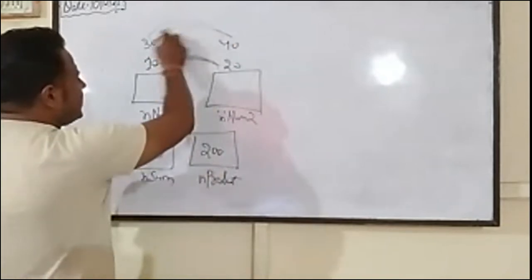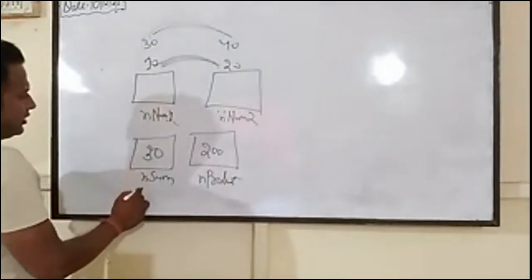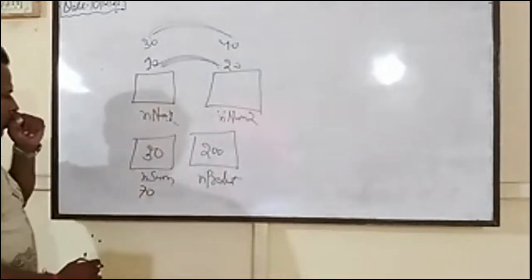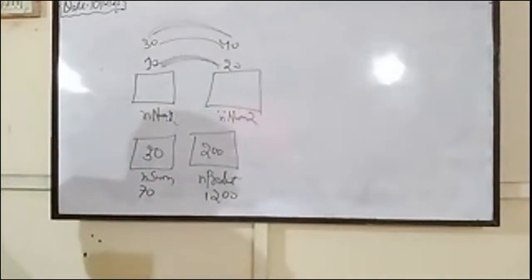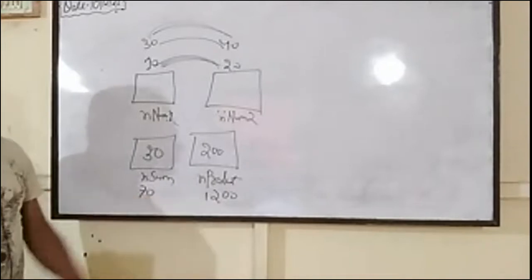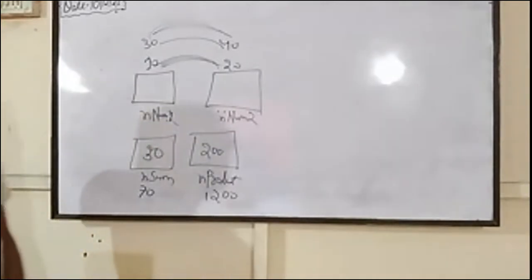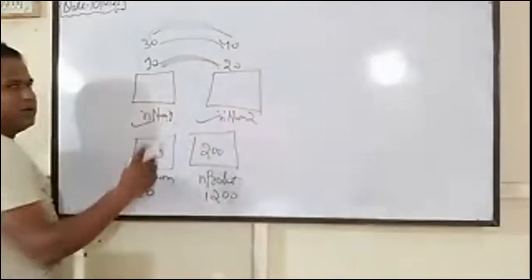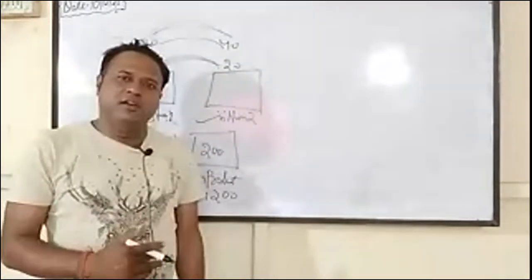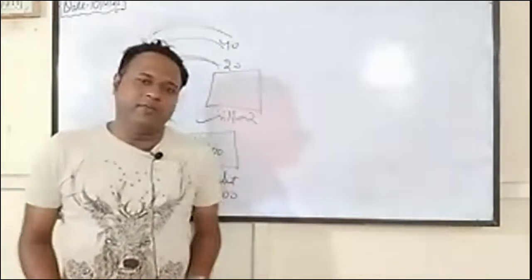For example, if you take 30 and 40, their sum is 70 and their product is 1200. These values change depending on the inputs. So we require four variables: two variables — num1 and num2 — for the two input numbers, and another two variables for the product and sum. So we require four variables total.